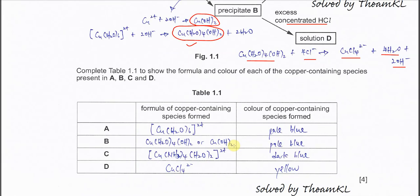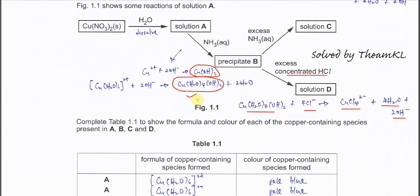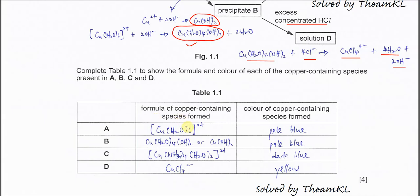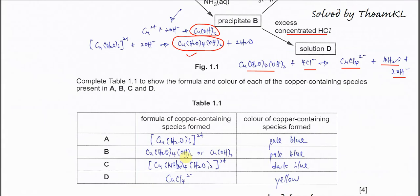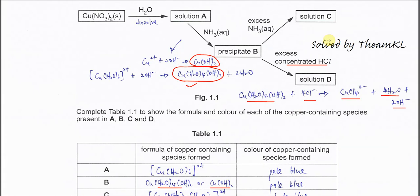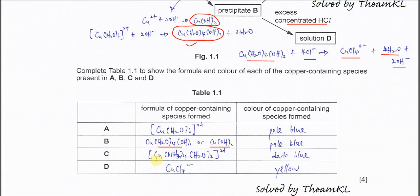Now completing the table: Solution A is copper surrounded by six water molecules — [Cu(H2O)6]²⁺ — an octahedral complex, pale blue. Solution B is the precipitate, Cu(H2O)4(OH)2, also pale blue. Solution C is [Cu(NH3)4(H2O)2]²⁺ — copper with four ammonia and two H2O — charge 2+ because ammonia and H2O are both neutral; the color is dark blue. Solution D is CuCl4²⁻ — copper with four chloride — a tetrahedral complex, yellow.